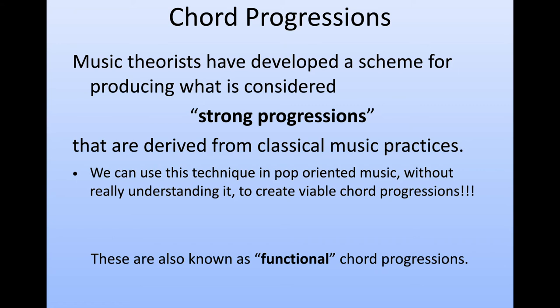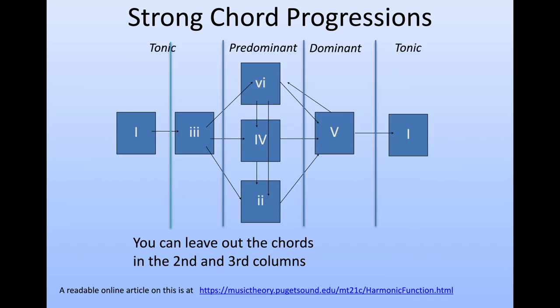Music theory people have looked at a lot of the music that classical composers have done and derived a bunch of practices, which they call strong chord progressions or functional chord progressions. We can use these practices in pop music as well, and this is represented in a flow chart. If you look at the beginning, we start with the tonic, and at the end we finish on the tonic. Just before the end, we have a dominant chord. So we have: tonic, go somewhere, dominant, tonic.